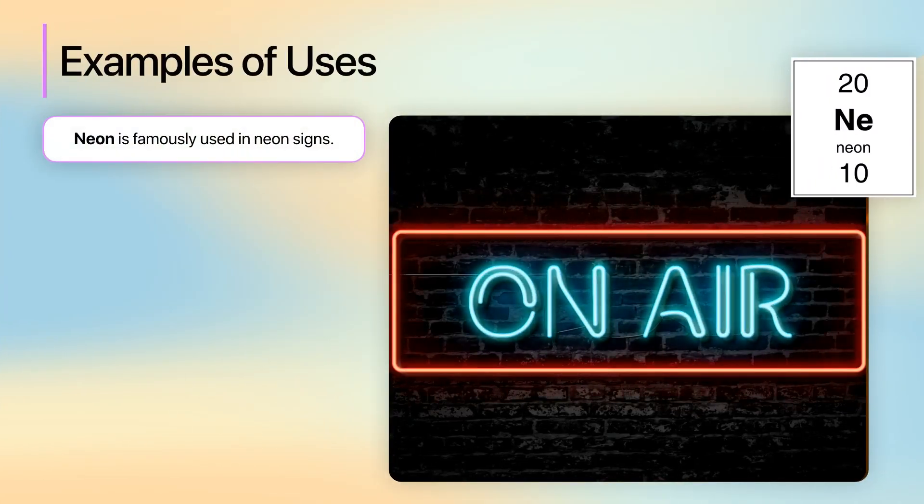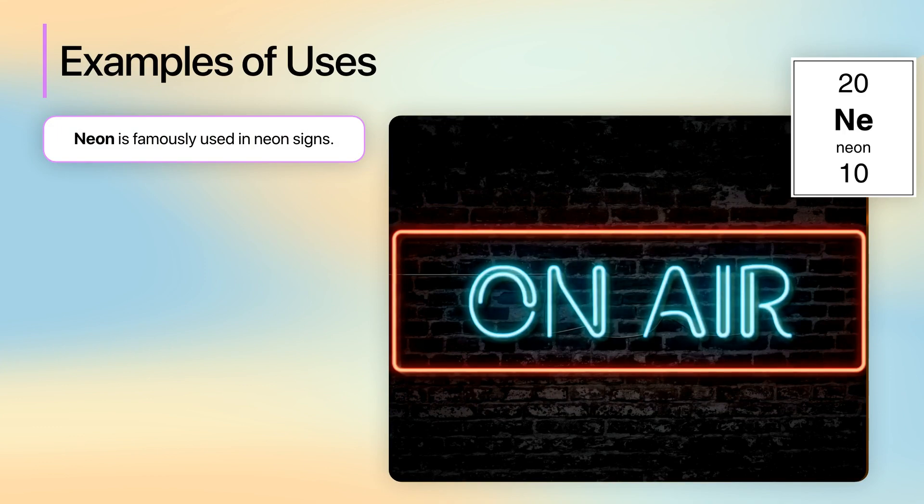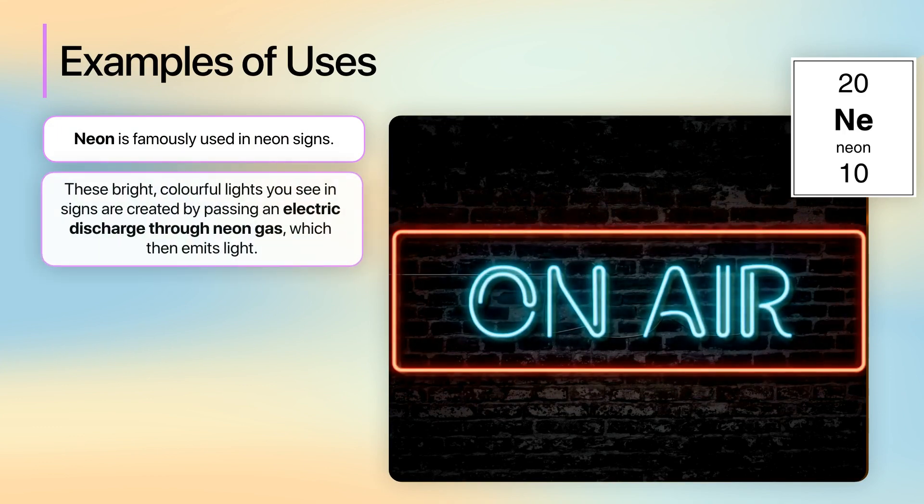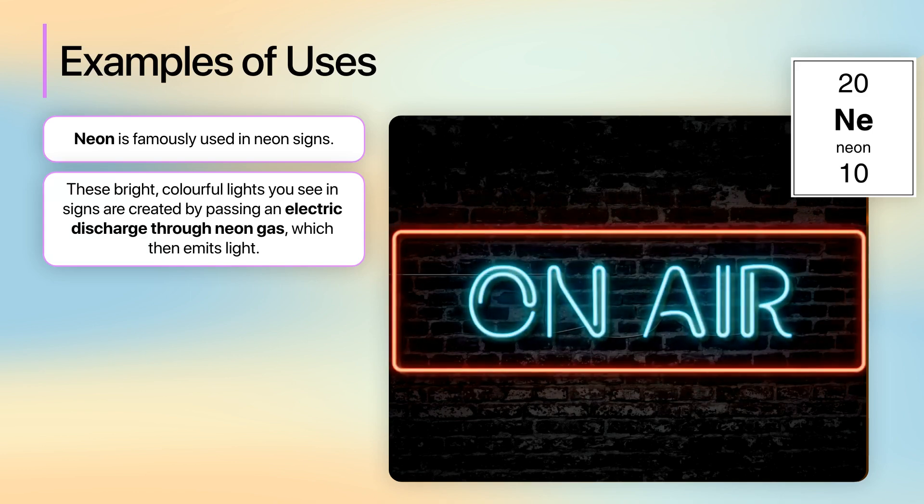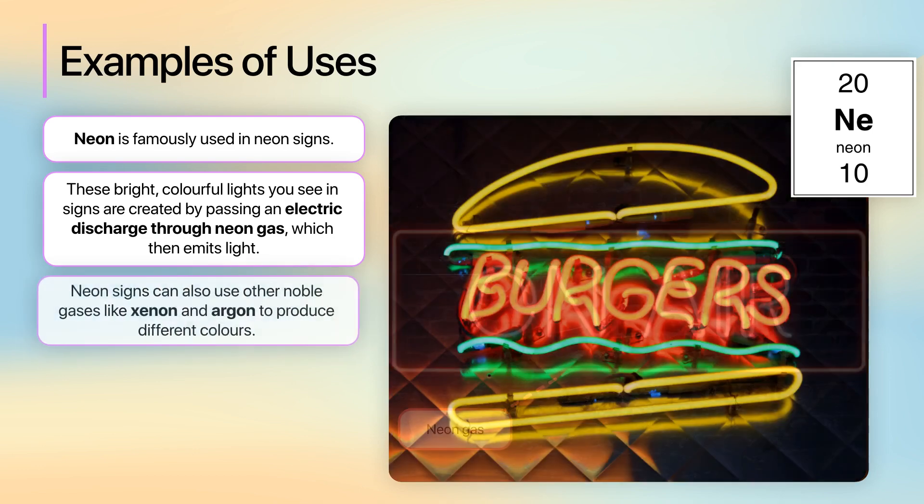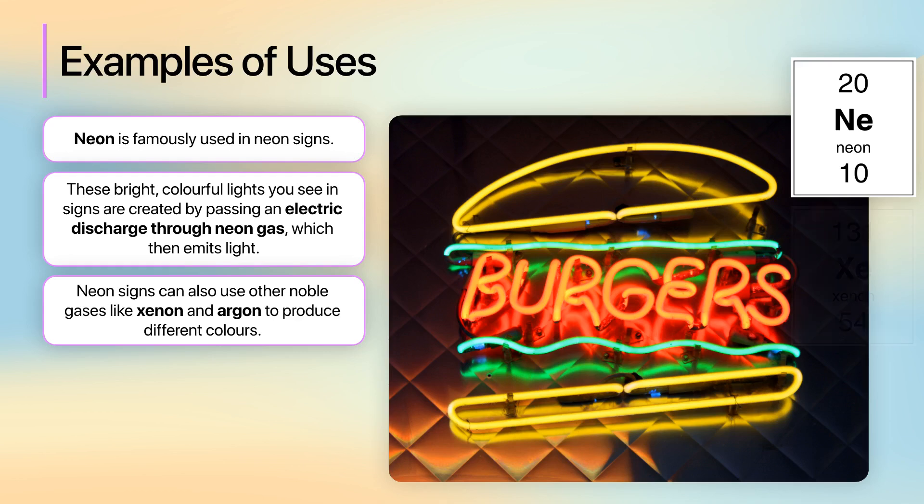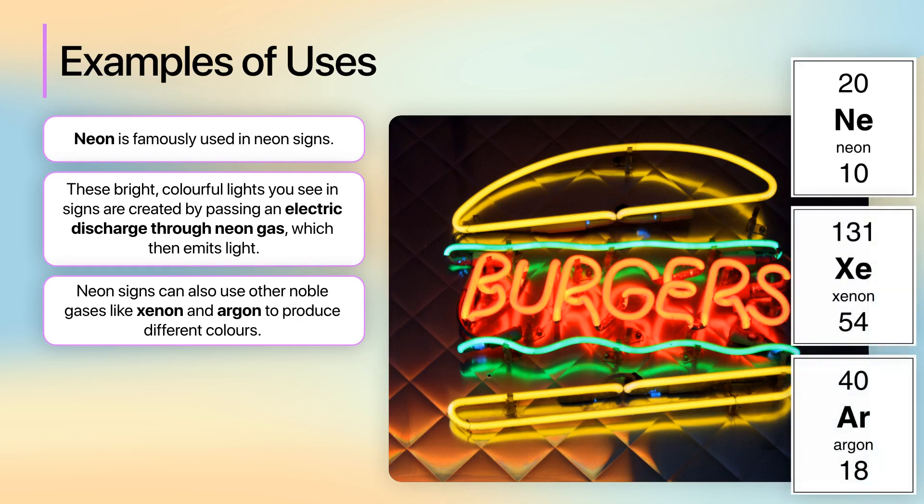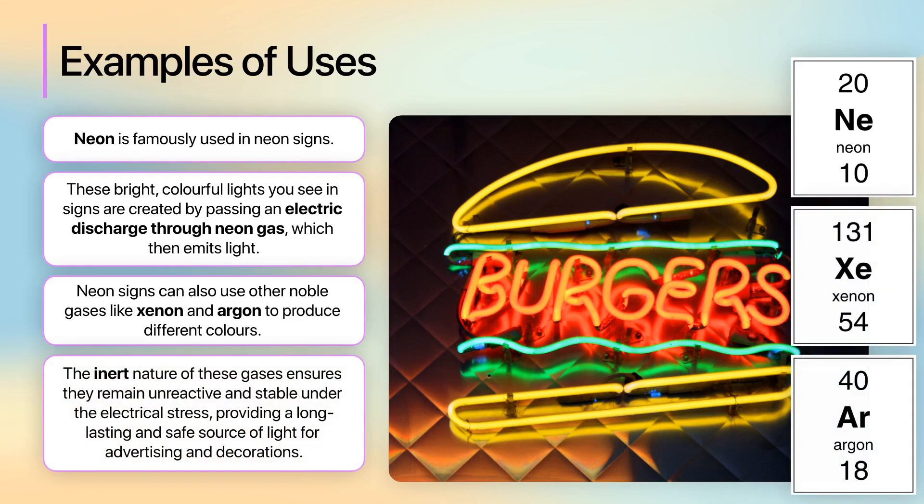Neon, another noble gas, is famously used in neon signs. These bright, colorful lights you see in signs are created by passing an electric discharge through neon gas, which then emits light. Neon signs can also use other noble gases like xenon and argon to produce different colors. The inert nature of these gases ensures they remain unreactive and stable under the electrical stress, providing a long-lasting and safe source of light for advertising and decorations.